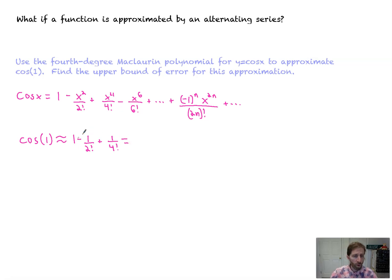Now if we're simplifying that down, that's one minus one half is one half, plus this would be one twenty-fourth. Four times three times two times one is one twenty-fourth. So this would be twelve twenty-fourths, and one twenty-fourth is thirteen twenty-fourths. Okay, so that's our approximation.